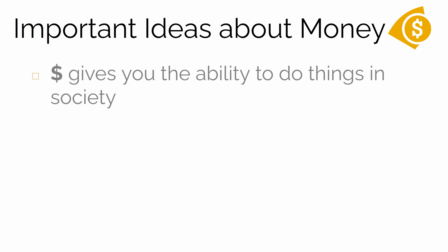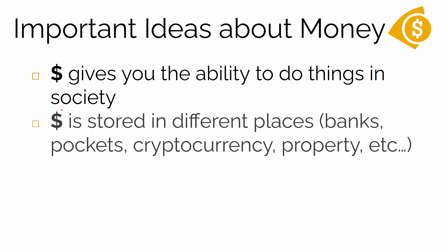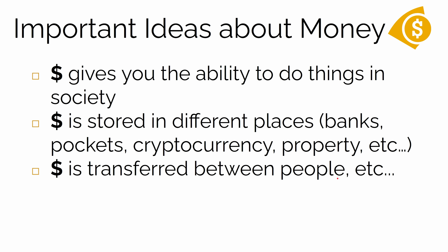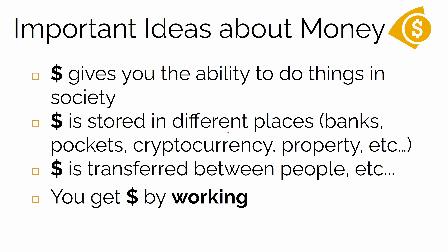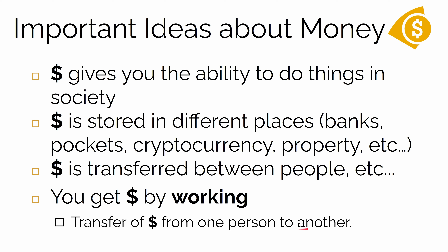Before we build out our analogy for energy, let's get four basic facts about money in society that we could probably all agree on. Number one, money gives you the ability to do things in society — to put gas in your gas tank, food on your table, pay your bills in general. When money is not being used to do things, it's stored in different places like banks, in your pocket. It doesn't just have to be physical money; it could be digital currency like cryptocurrency or Bitcoin. This ability to do something could be stored in people or property. In general, money is transferred between people or entities when it's not being stored. In a free market society, most people get money by doing work. And when working happens, you get money, but an employer is going to lose money — so necessarily, when work happens, there's a transfer of money from one person to another.